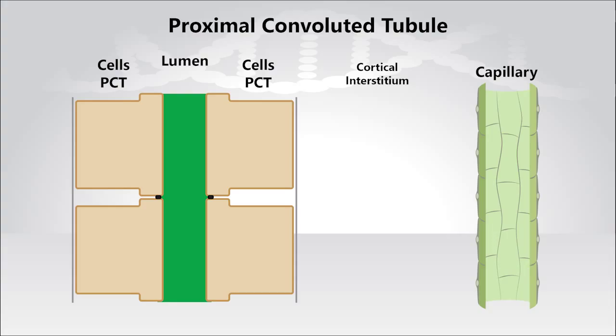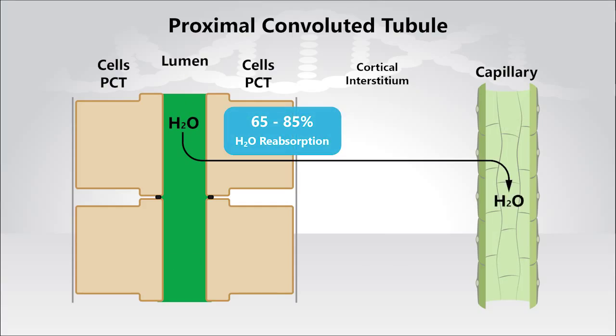Now, we know that the ultrafiltrate entering the proximal tubule from the glomerulus is roughly 300 milliosmoles, and that the osmolality of the cortical interstitium and fluid within the peritubular capillaries is also roughly 300 milliosmoles. We also know that the proximal tubule reabsorbs 65-85% of the water from the ultrafiltrate.